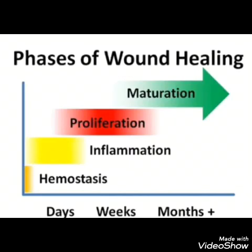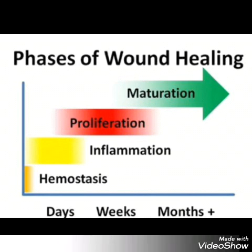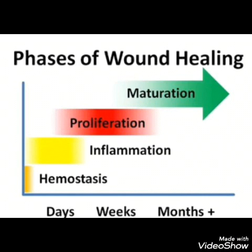There are four phases of wound healing. The first phase is hemostasis, the second is inflammation, the third phase is proliferation, and the fourth phase is maturation. We will study all the phases one by one. This process of wound healing will take days to months, so it is a long time-taking process.